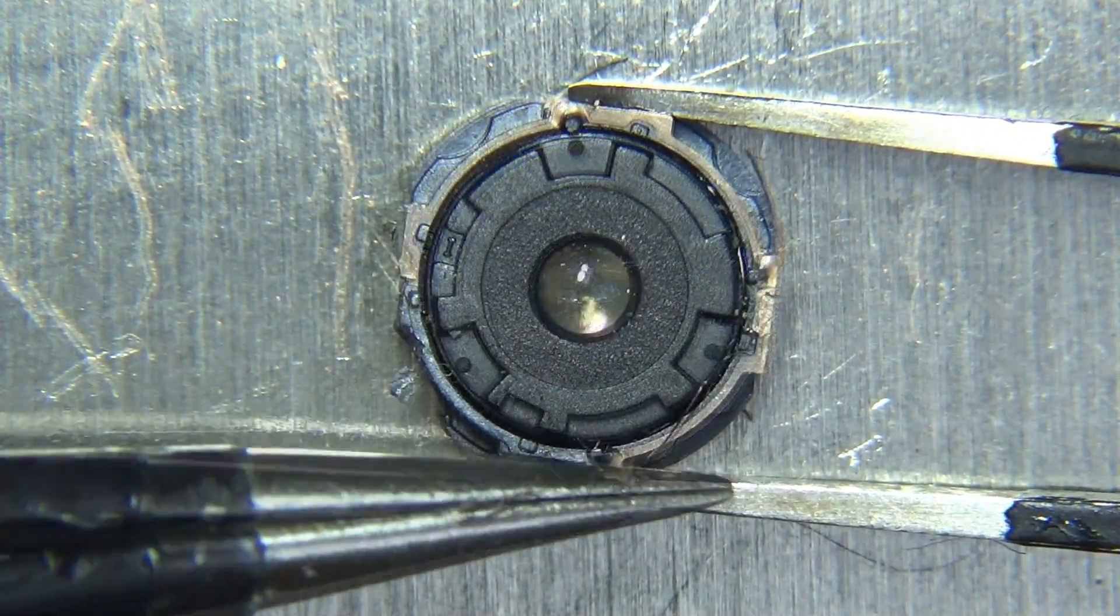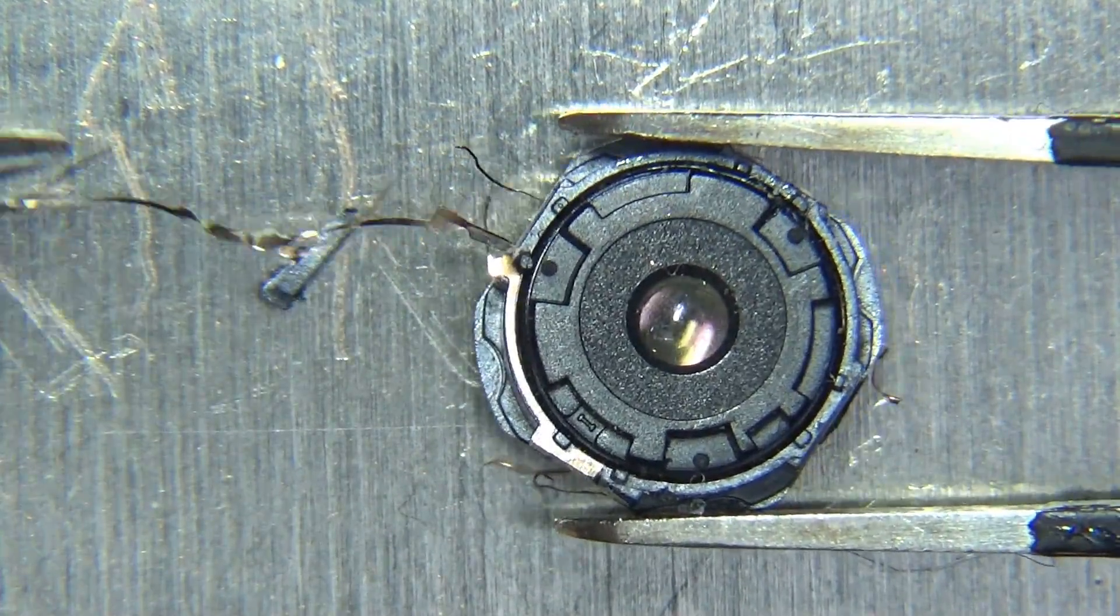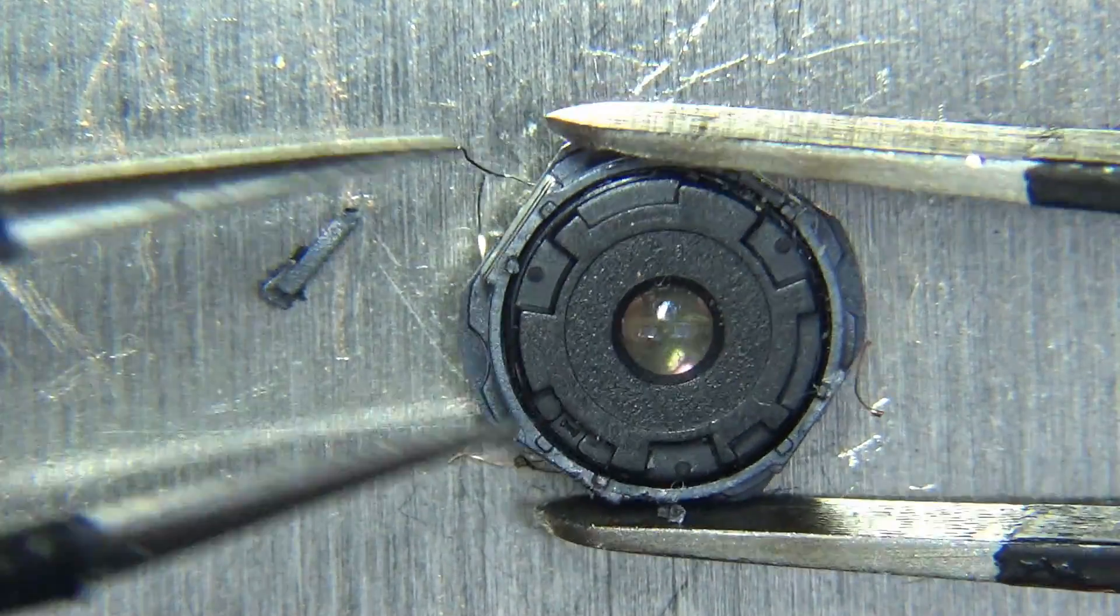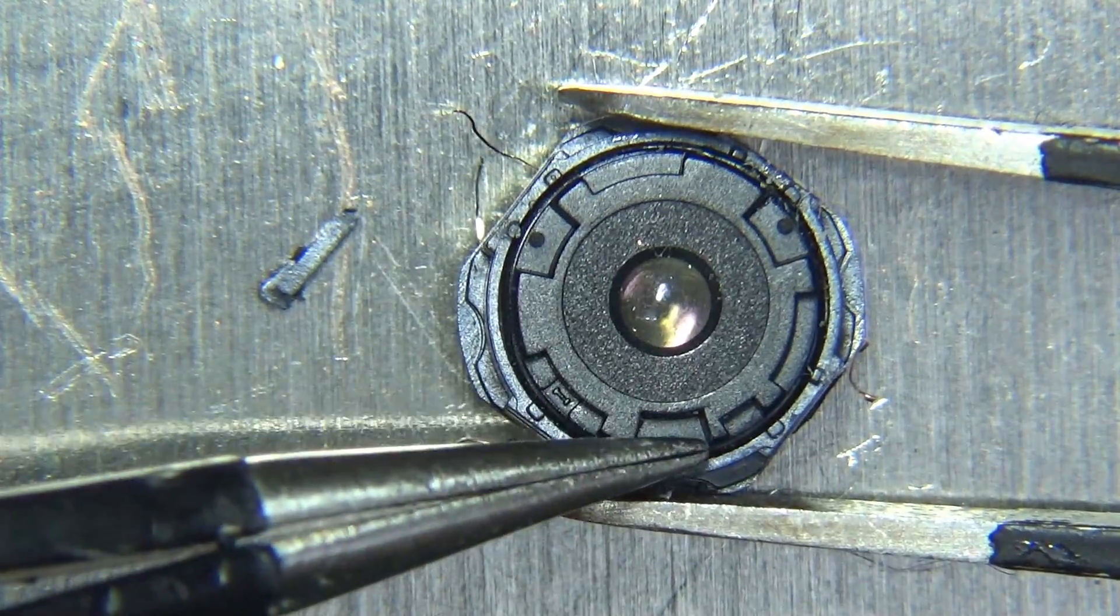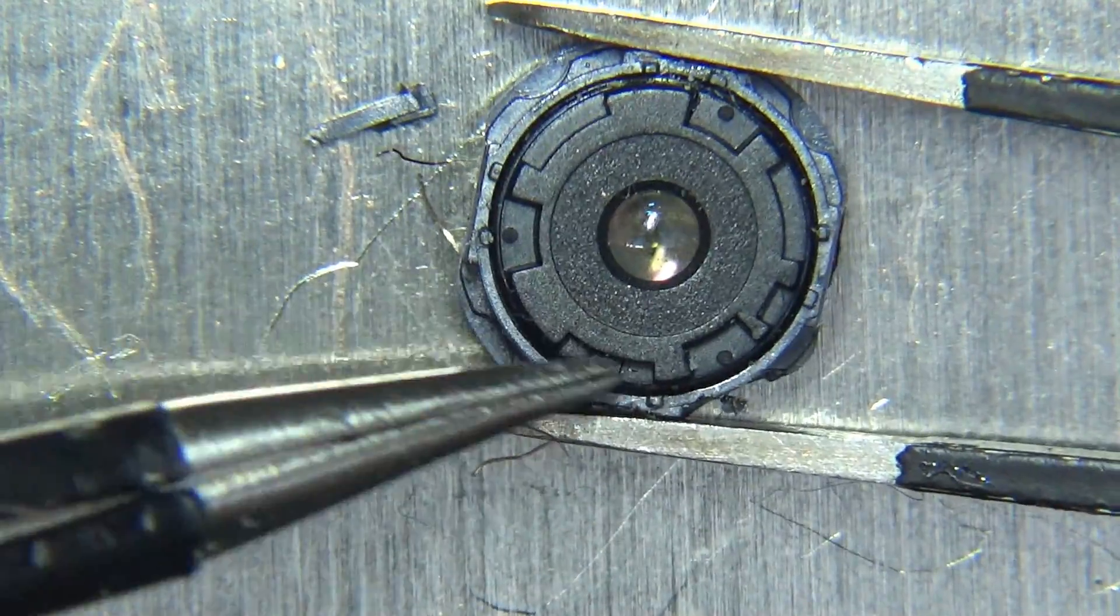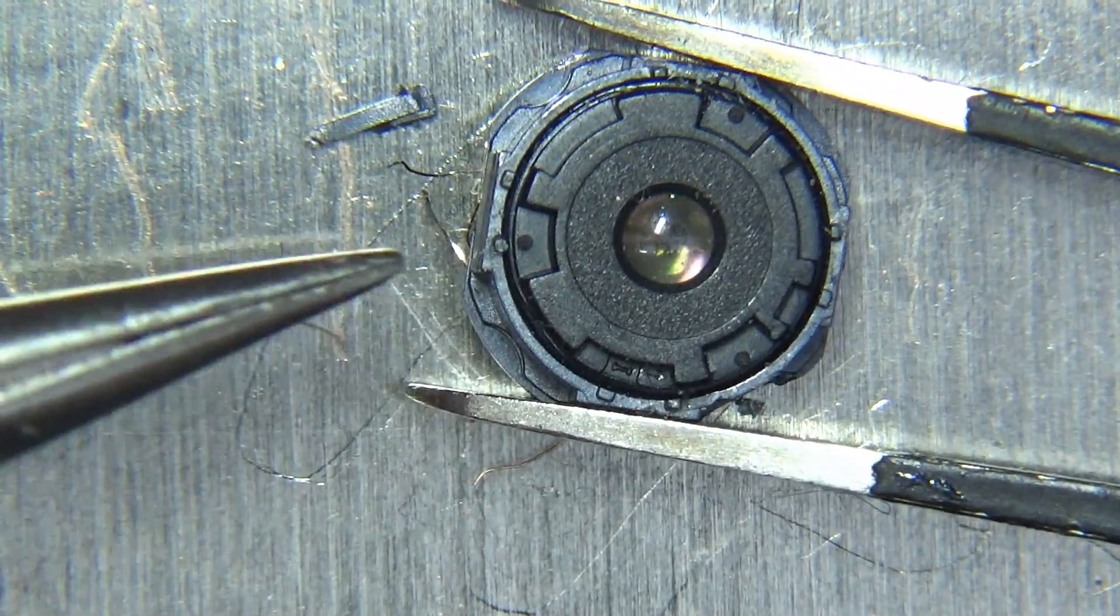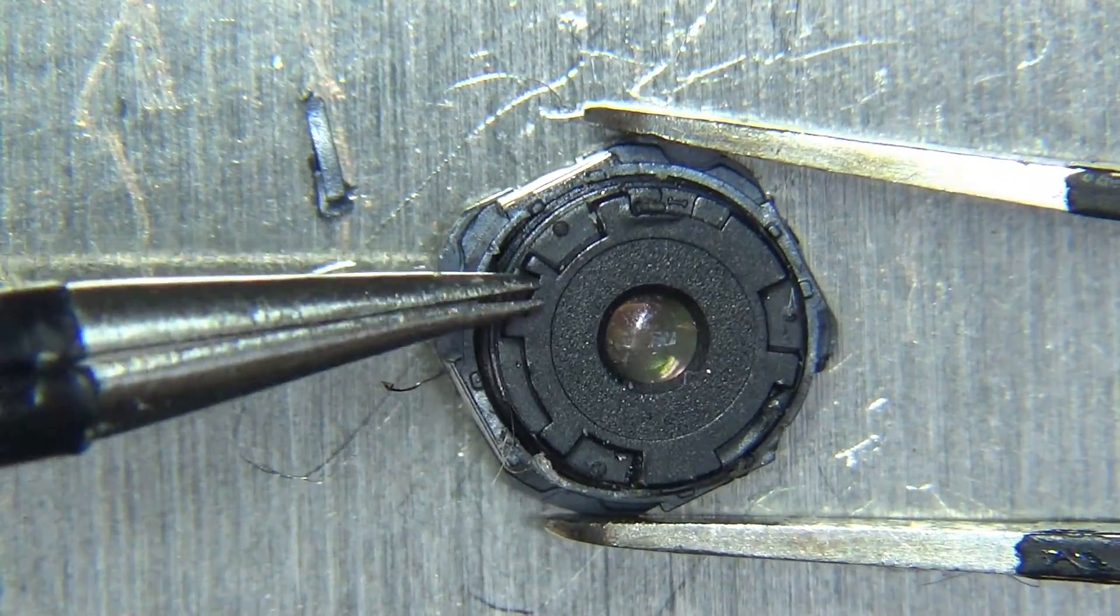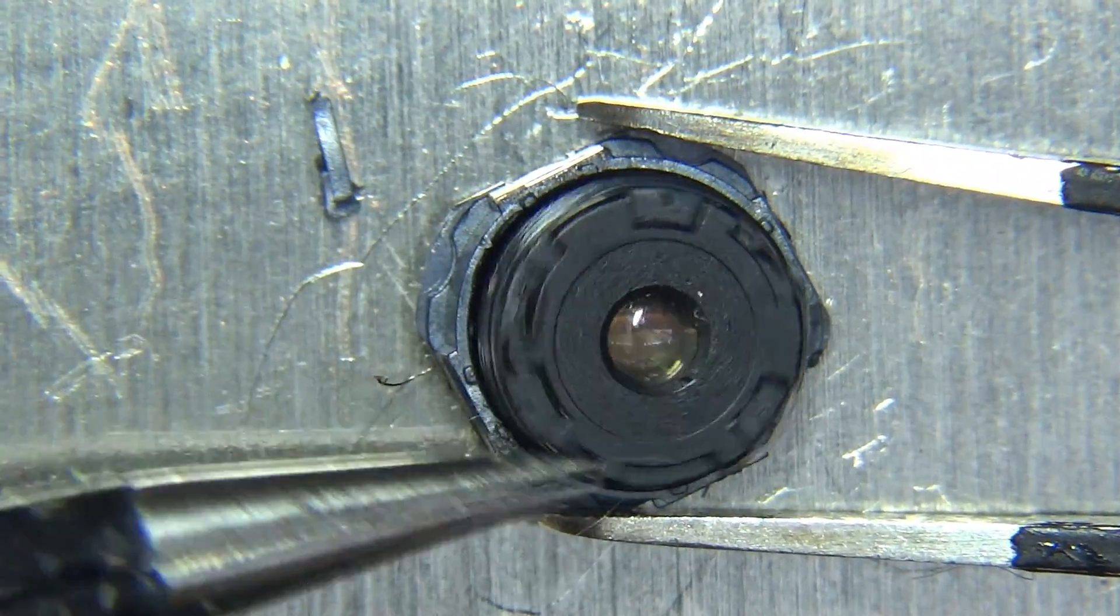Then we've got this metal part around. I'm not sure what that is. Maybe some sort of spring. Maybe it was for contacts. Those are definitely two different pieces of plastic. So will this unscrew? Yes it does.